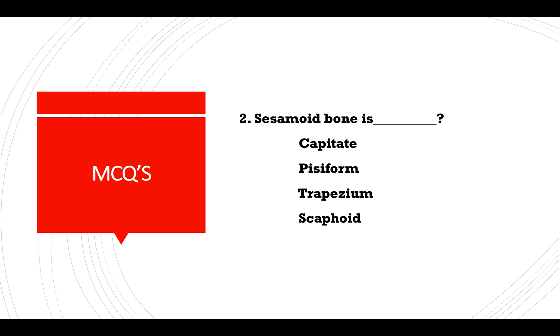MCQ: The sesamoid bone among the carpals is — capitate, pisiform, trapezium, or scaphoid? Answer: Pisiform.